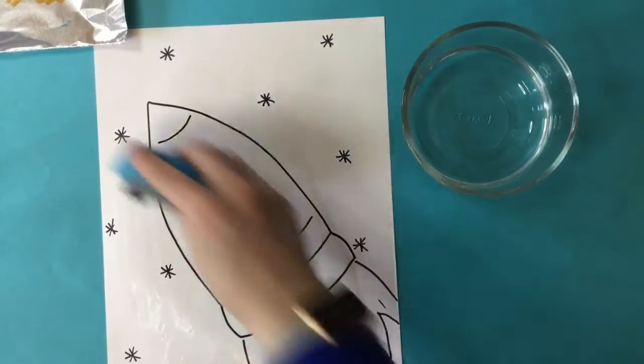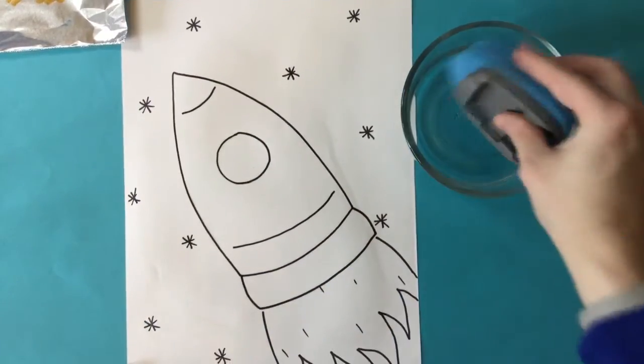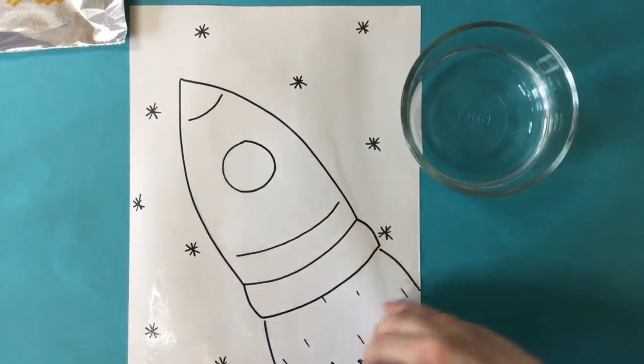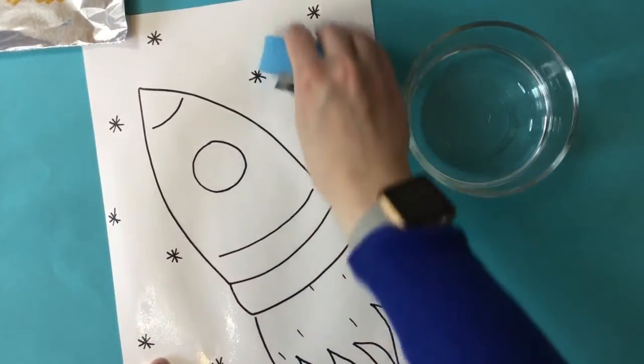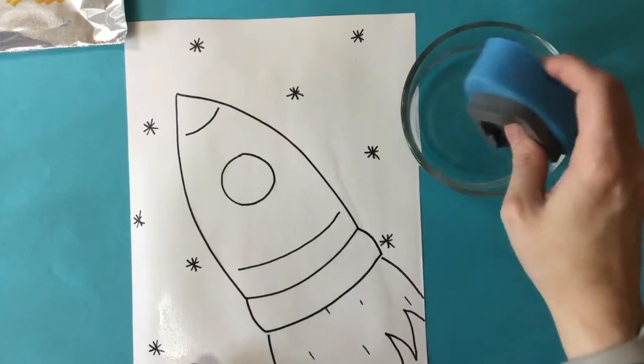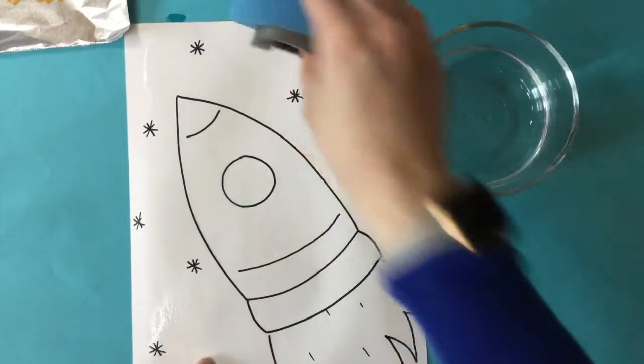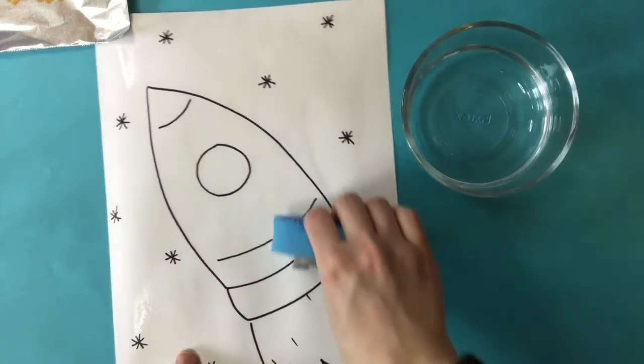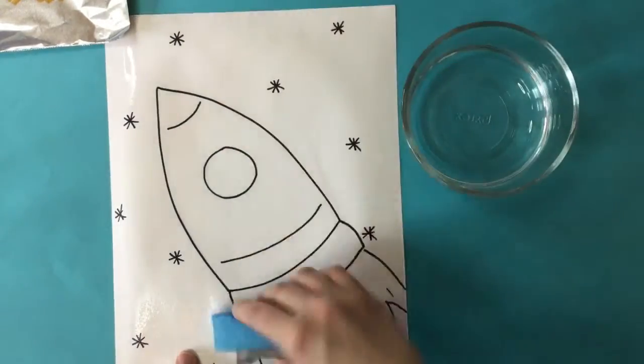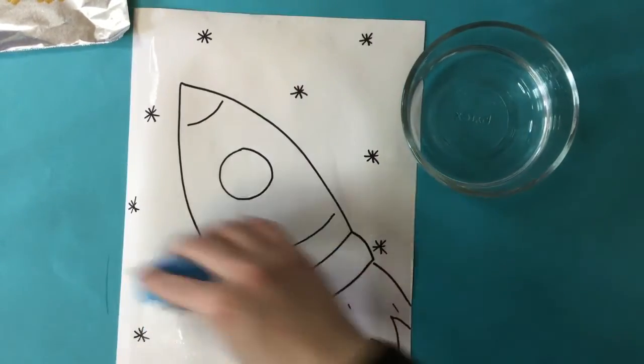If you're using a spray bottle, you can give it a very light spray with the water. Again, we don't want any puddles. We just want a really nice light coating of water on our paper. Make sure to go all the way to the edge. Even if a little bit gets on the table, that's okay.